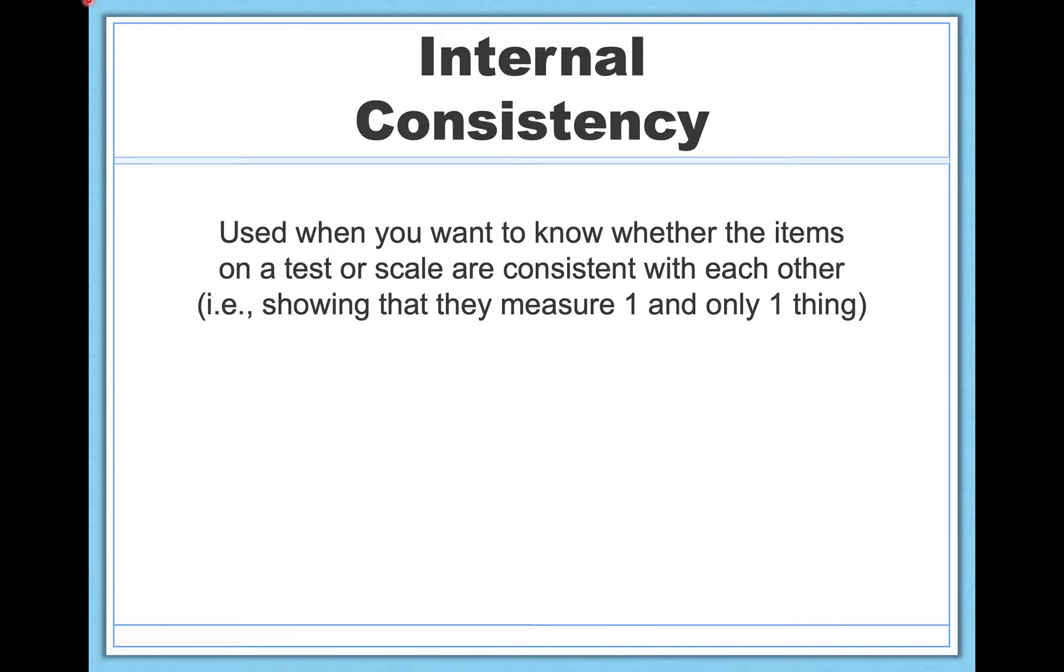Now, if you're going to develop your own scale, and you want to publish those results, for example, you're going to need to prove to experts in the field, other professors and graduate students and so on, that your scale is reliable. And also, as we'll talk about in a future video, that your scale is valid. So internal consistency is a way of measuring the reliability of a scale. It's used when you want to know whether items on a scale or a test are consistent with each other, showing that they measure one and only one thing.